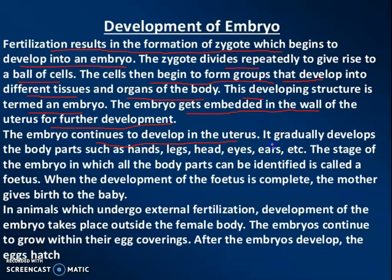The embryo gradually develops different parts such as hands, legs, head, eyes, ears, etc. The embryo develops in the uterus and its parts become identifiable as it grows, eventually becoming a fully formed body.